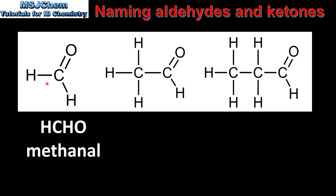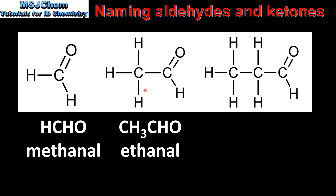We'll start with the smallest aldehyde, which has one carbon atom. This is the condensed structural formula and it's named methanal. Our next example has two carbon atoms; this is the condensed structural formula and it's named ethanal.